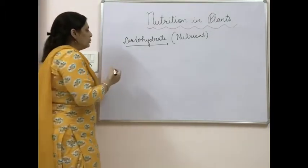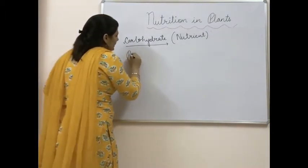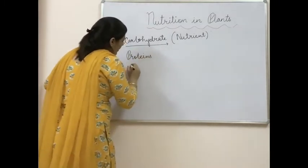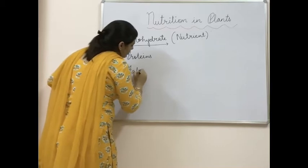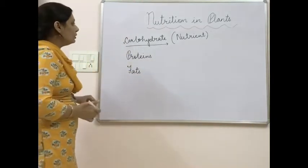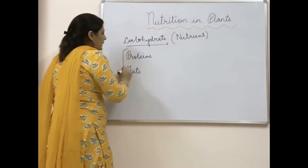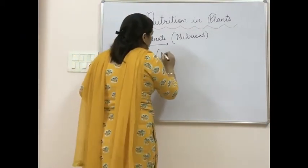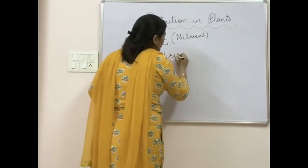These nutrients are like proteins, fats, minerals, and vitamins. Now how do plants synthesize these proteins and fats? Protein is basically a nitrogen-rich compound - it has a sufficient amount of nitrogen.